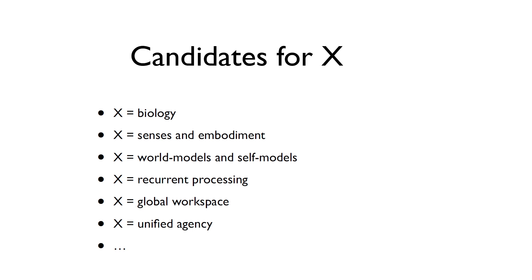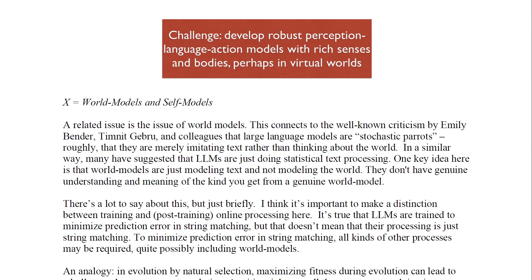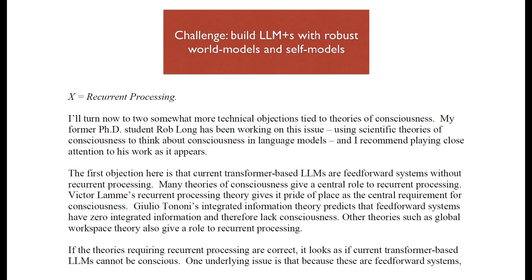Fifth, global workspace — gathering information from non-conscious modules and making it accessible. Sixth, unified agency — acquiring stable goals and beliefs, rather than merely predicting text. Some of these Xs rely on contentious premises, such as the claim that biology is a requirement or the role of sensory grounding. The objections from recurrent processing, global workspace, and unified agency appear to be stronger, as it's plausible that current LLMs do not possess these, which might be necessary for consciousness.